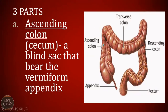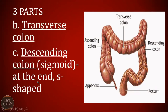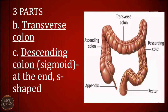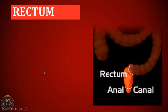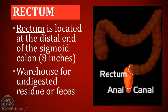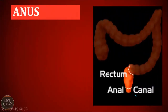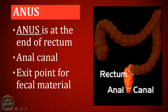The large intestine is composed of three parts: the ascending colon, the transverse colon, and the descending colon. Next is the rectum, located at the distal end of the sigmoid colon. It is eight inches long and serves as the warehouse for undigested residues or feces. The last part is the anus, which is the end of the rectum and also called the anal canal — it is the exit point for fecal material.